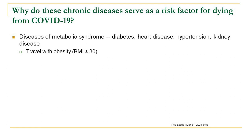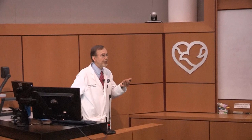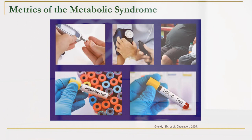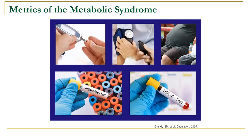Rob Lustig is a pediatric neuroendocrinologist out of California. About 10 years ago he had a TED Talk called The Bitter Truth. The metrics of the metabolic syndrome: if you have three or more of these five criteria, you are defined as having metabolic syndrome. These include pre-diabetes or diabetes (fasting blood sugar greater than 100 or elevated hemoglobin A1C), hypertension, excess belly fat, BMI greater than 30, elevated triglycerides, and depressed HDL.